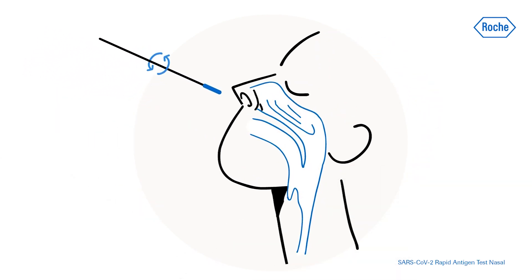Rotate the swab while inserting it two centimeters, slightly less than one inch, into the nostril and parallel to the palate until resistance is met at the turbinates.